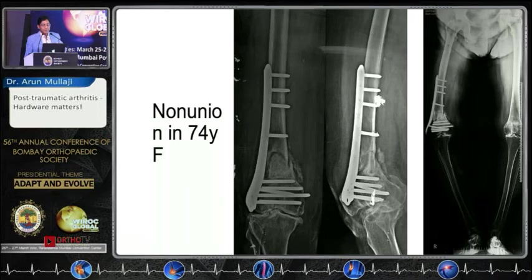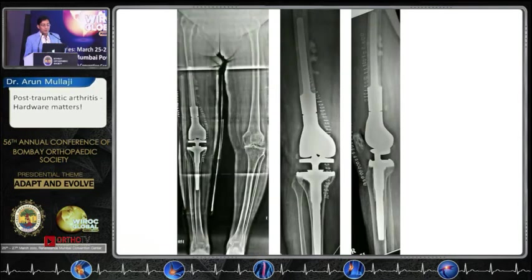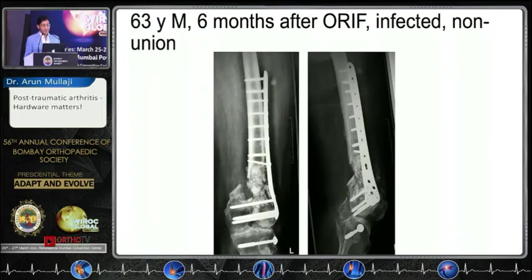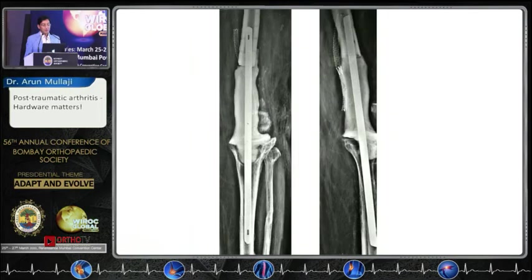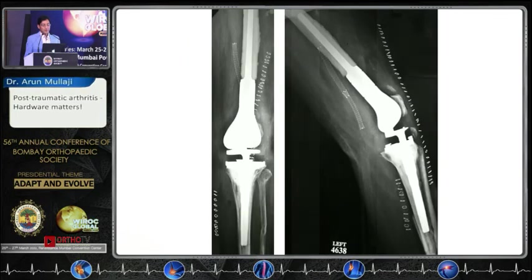This is a non-union infection in a 74-year-old lady with medial OA, where we used a tumor-type prosthesis. The last case is an infected non-union where we placed a rod with a cement spacer, followed by a tumor prosthesis. Thank you very much.